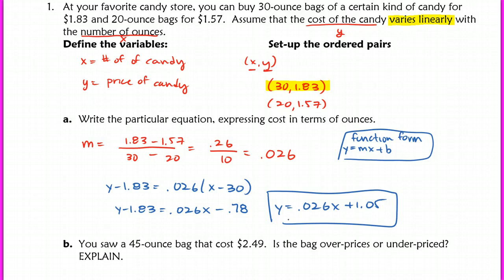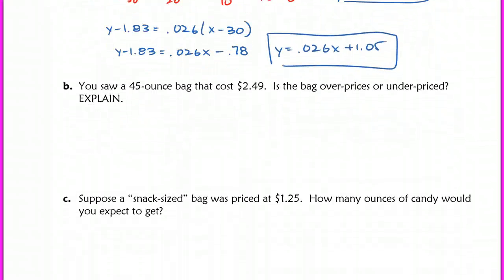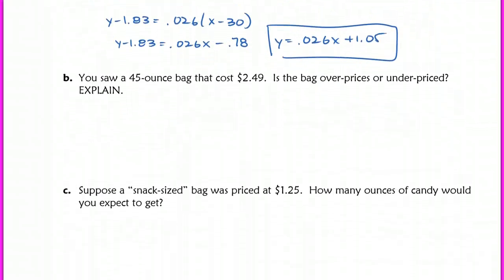Okay, so this is our function. Now we're going to use this function for the rest of our questions. So that's why it's really important we get this part right. Alright, now, the next question says, You saw a 45-ounce bag that costs $2.49. Is this bag overpriced or underpriced?